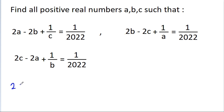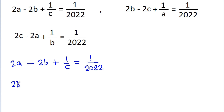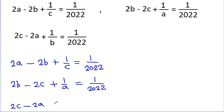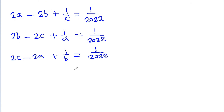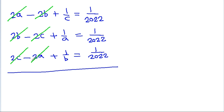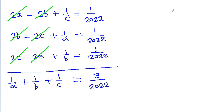So, if we add these 3 equations, then -2b and 2b will get cancelled, and -2c and 2c will get cancelled, and 2a and -2a will get cancelled, and we get 1/a + 1/b + 1/c is equal to 3/2022.